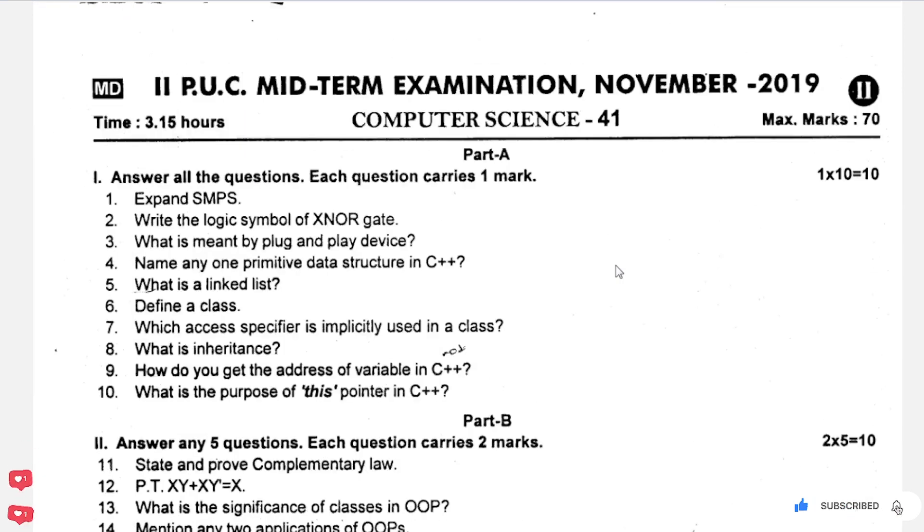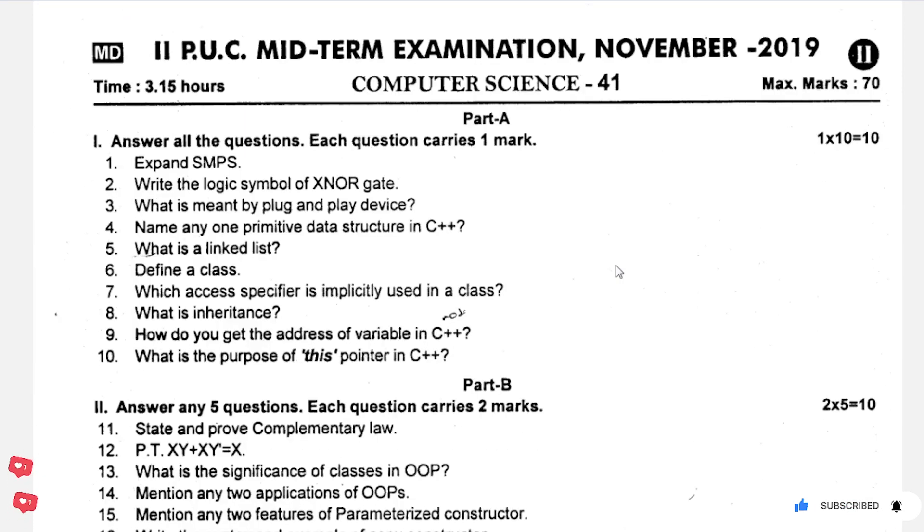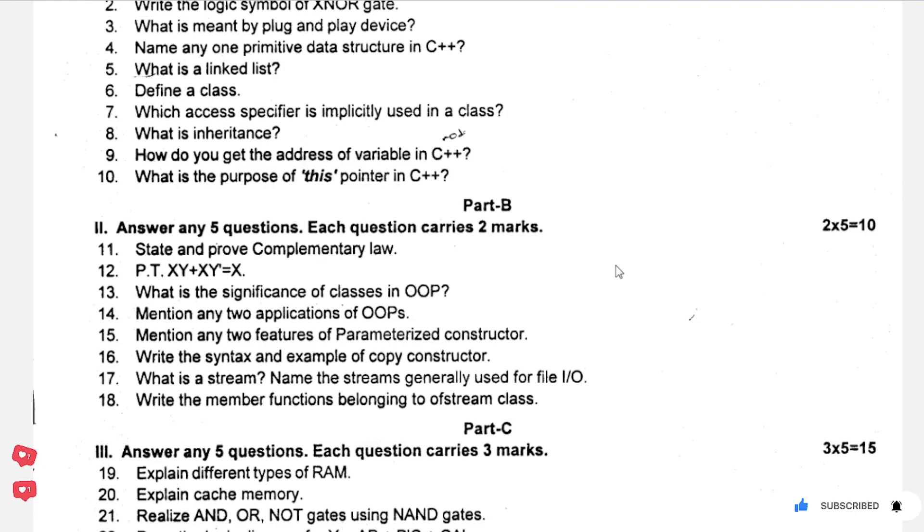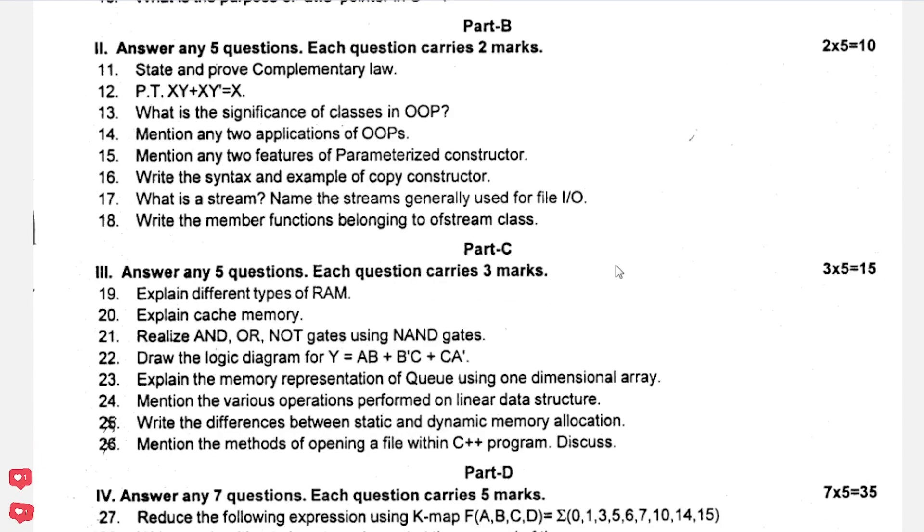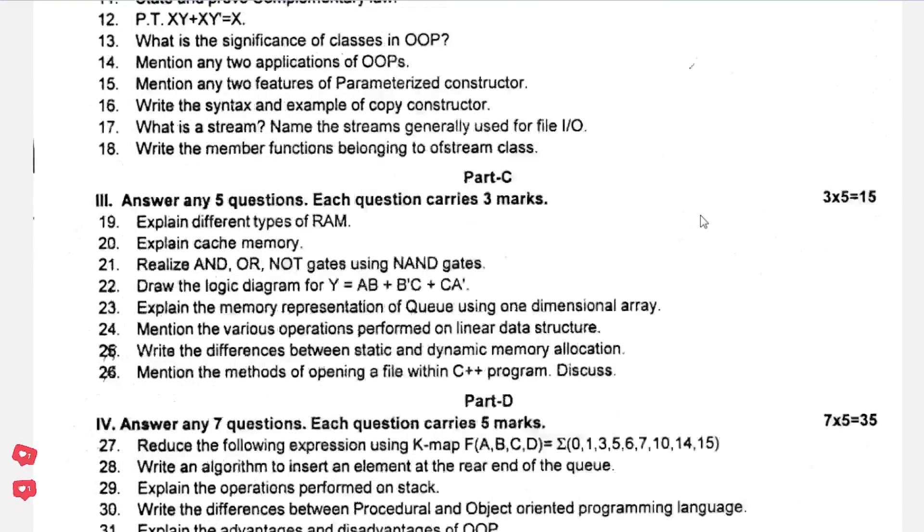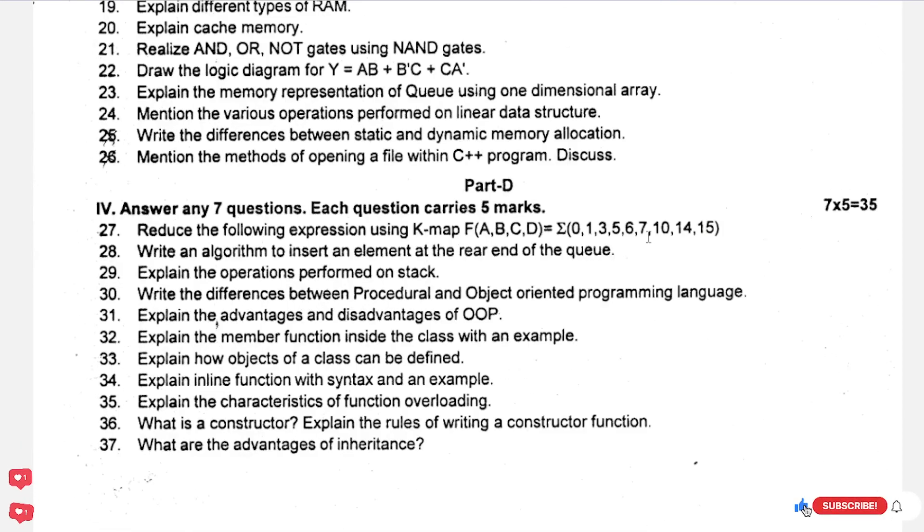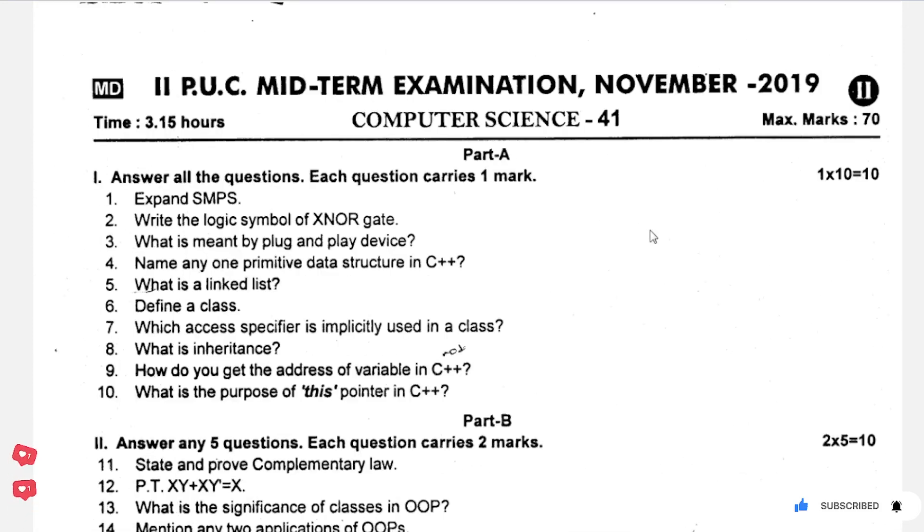10 marks in the first section, 10 marks in the second section with two marks each. Next, answer any five questions carrying three marks. Then last seven questions, each carrying five marks. This is the 2019 paper. I think this will help you guys, okay?